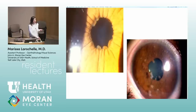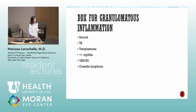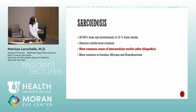Differential diagnosis for granulomatous inflammation: textbooks separate them but there's crossover. Purely granulomatous — think sarcoid and TB. Others like toxo, syphilis, and herpetic can go either way. VKH and sympathetic ophthalmia are definitely granulomatous. Sarcoid has up to 50% ocular involvement; anterior uveitis is the most common manifestation, and sarcoid is the most common known cause of intermediate uveitis.